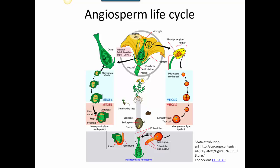This is called double fertilization, which is unique to the angiosperms. One sperm fertilizes the egg, forming the embryo. The other sperm fertilizes the two nuclei inside the embryo sac, forming a triploid endosperm — a nutritive tissue that nourishes the embryo as it grows. The outer part of the ovule forms the seed coat. That seed will germinate, forming another flower, and the life cycle begins again.